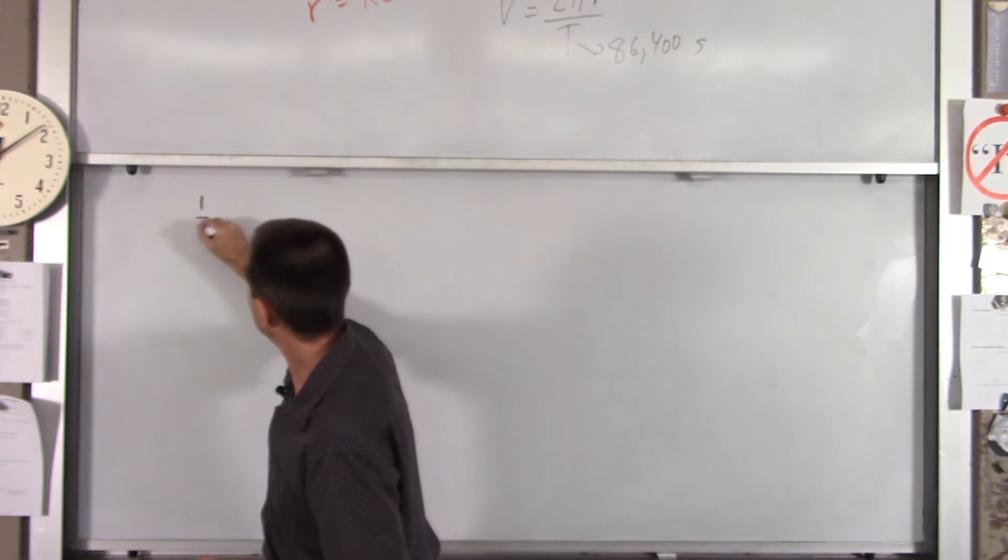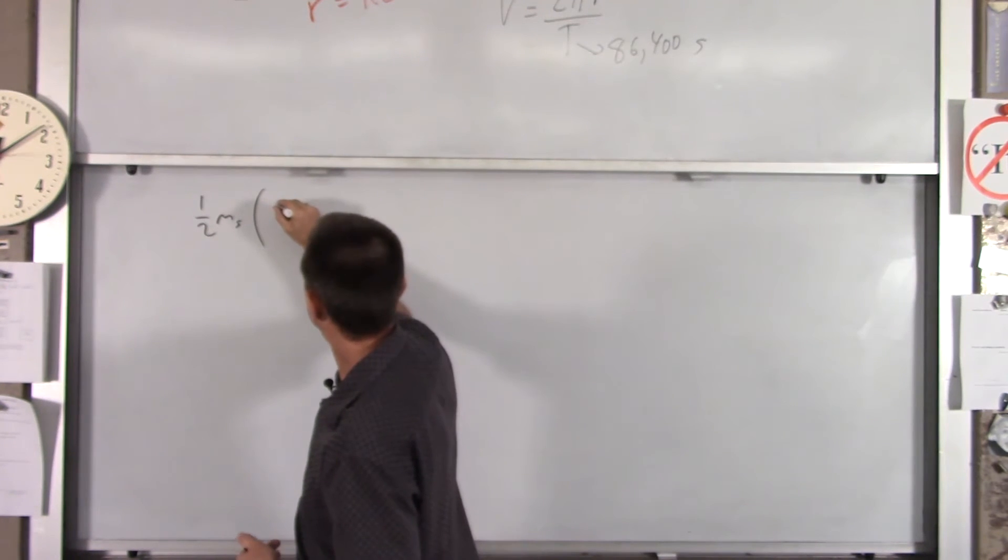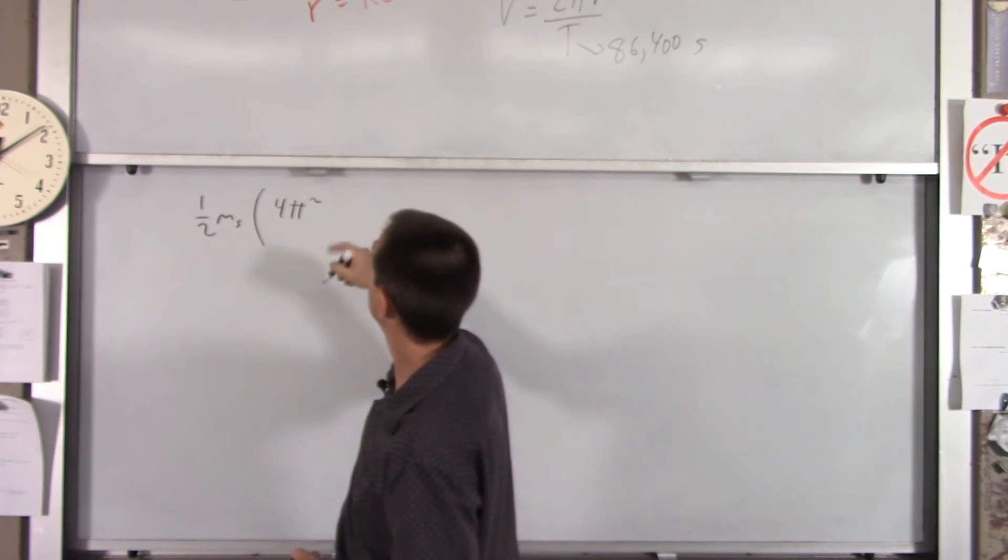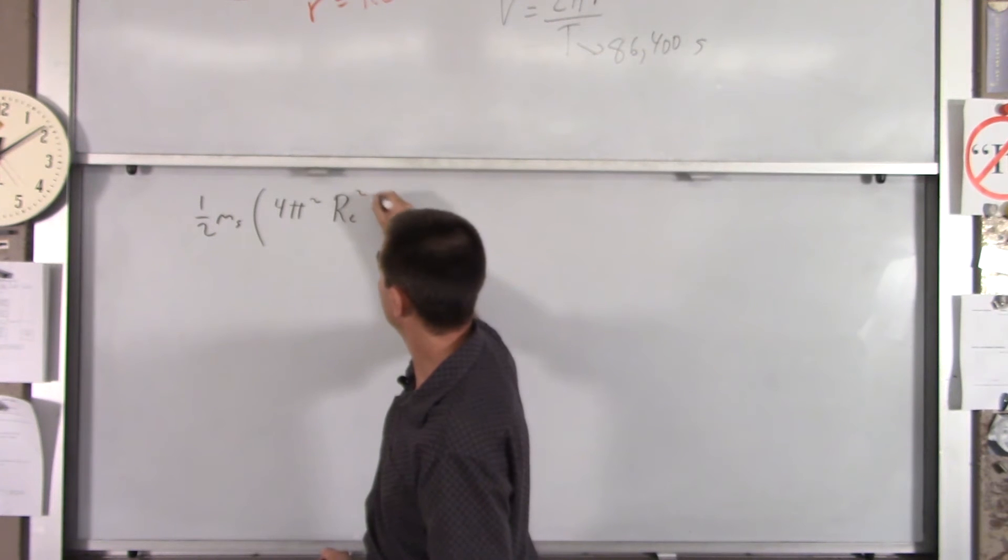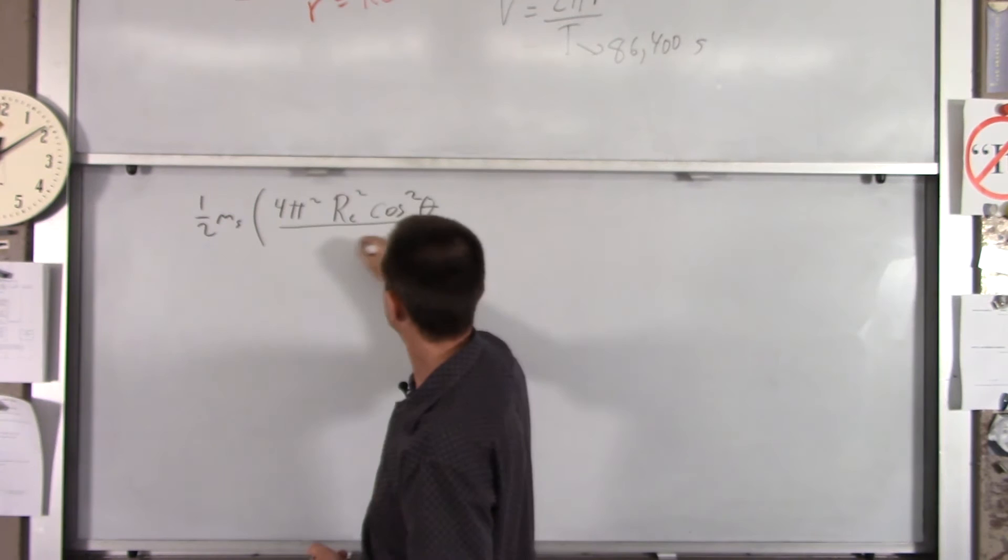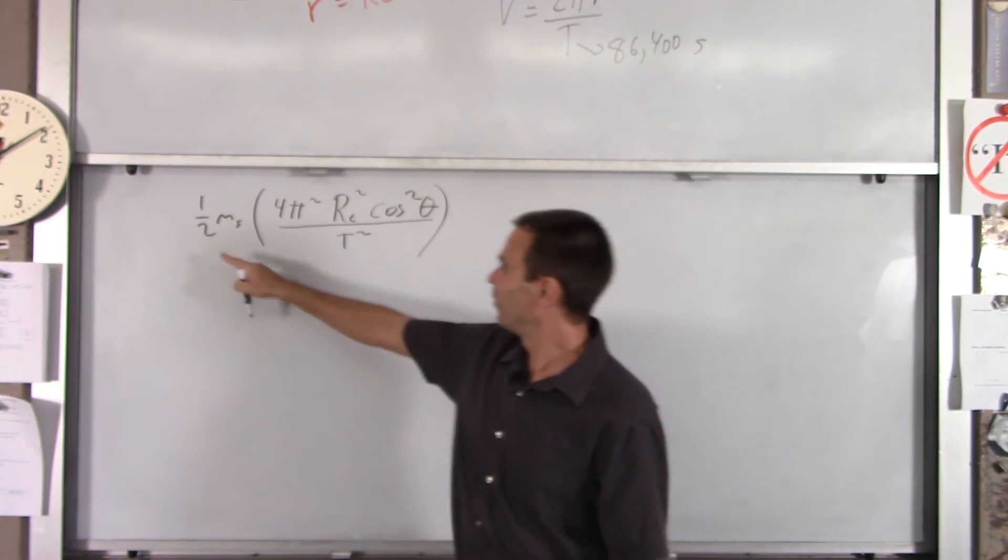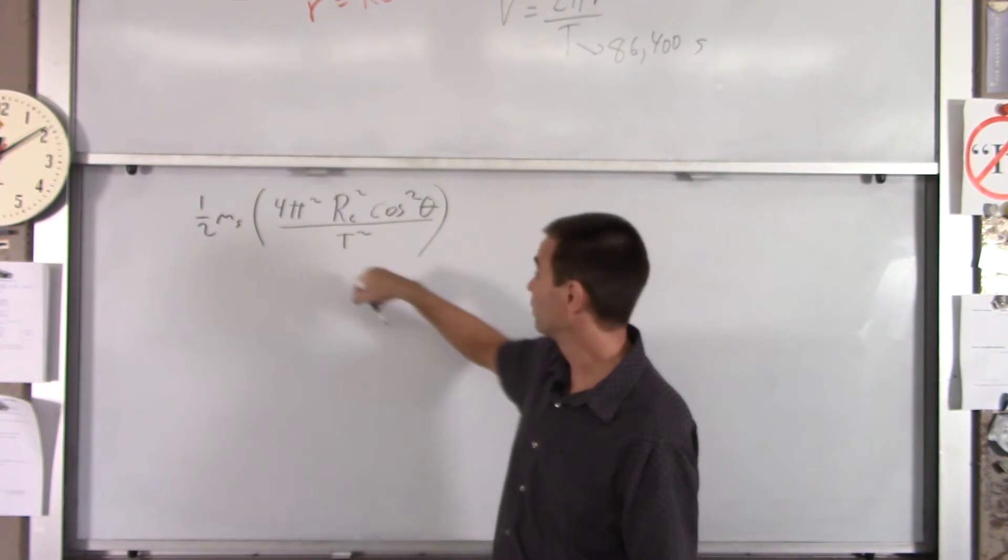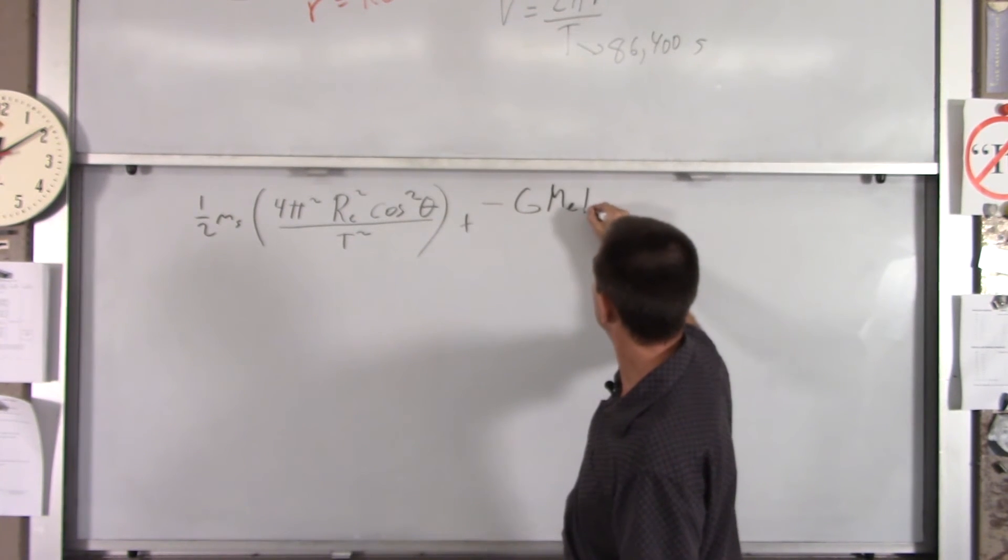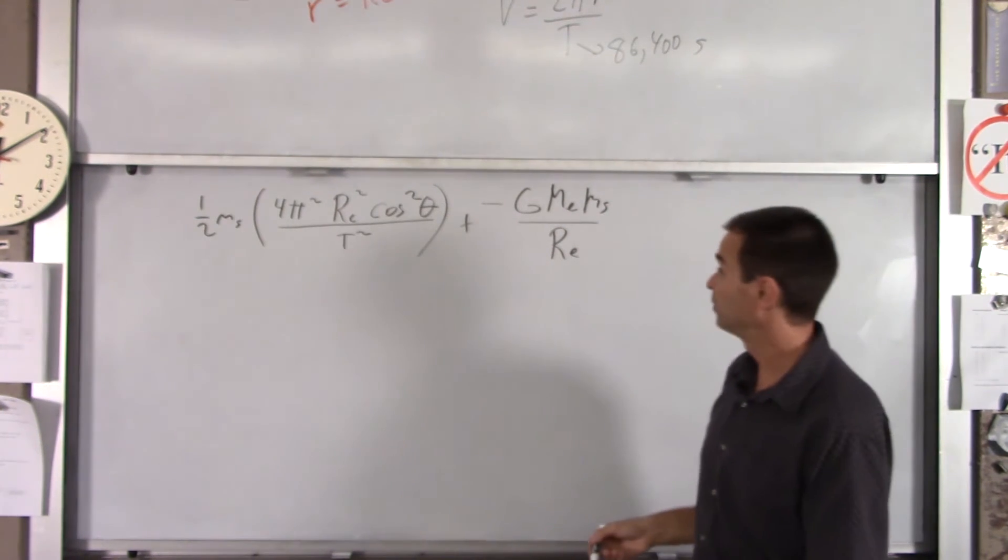So k naught is 1 half mass of the ship v squared, which ends up being, it's 2 pi r. I'm going to square that. So it's 4 pi squared r squared, which is radius of the Earth squared, cosine squared of your latitude angle, all over t squared. That's a lot of work. No pun intended. So we got 1 half m v squared, plus negative G mass of the Earth, mass of the ship over radius of the Earth.